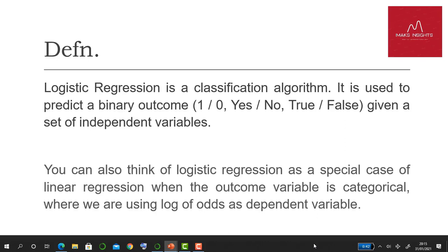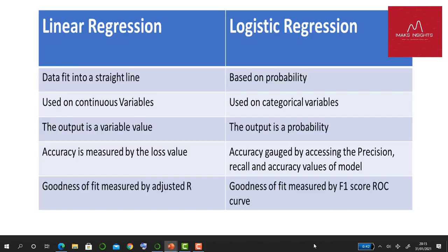The difference between linear regression and logistic regression: In linear regression the data is fit into a straight line, but logistic regression deals with probability. Linear regression is used on continuous variables while categorical variables are used in logistic regression. The output is a variable value in linear regression, but in logistic regression the outputs are probability.